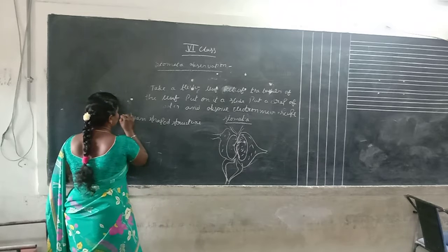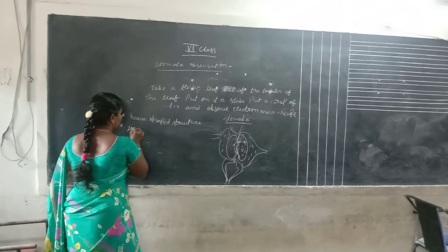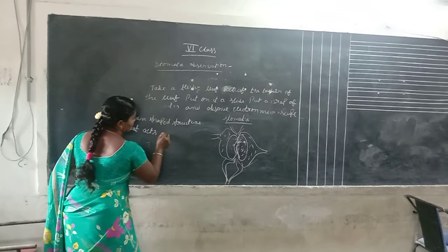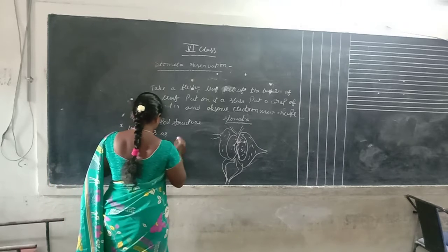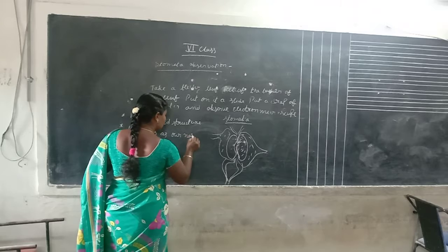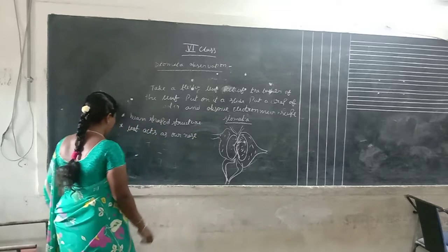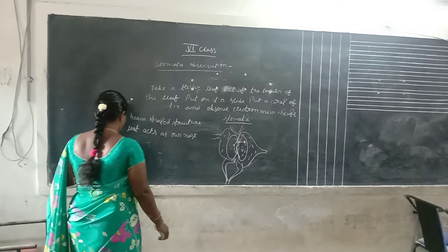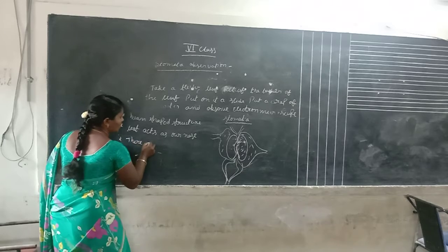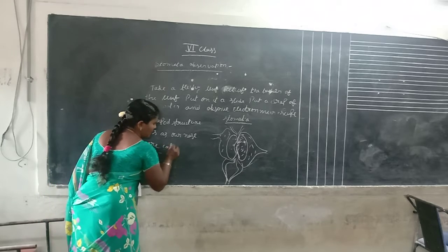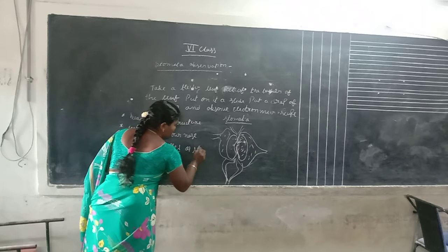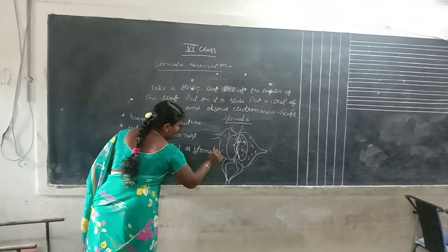The leaf acts as our nose. These openings are called stomata.